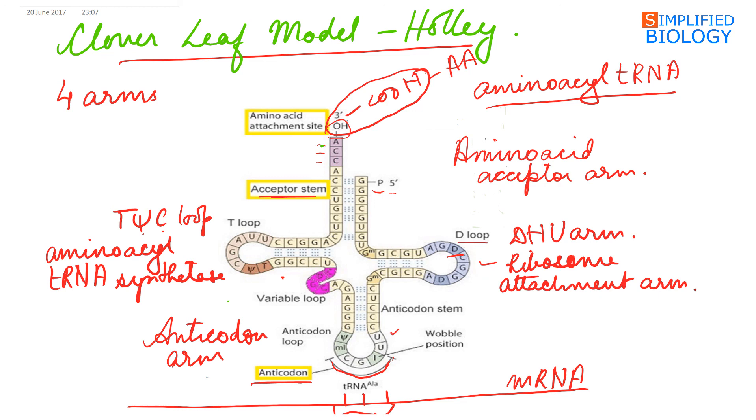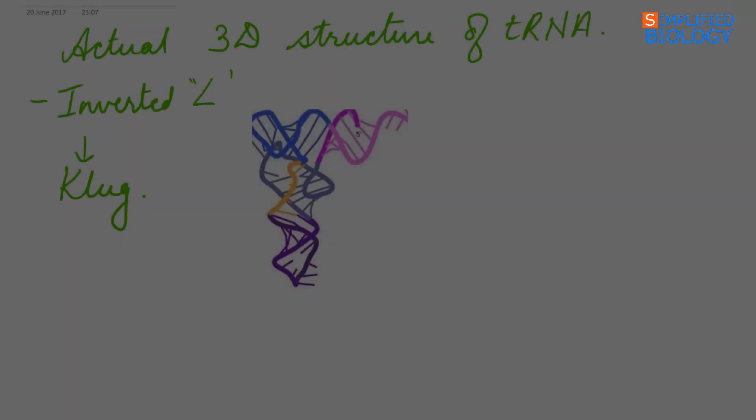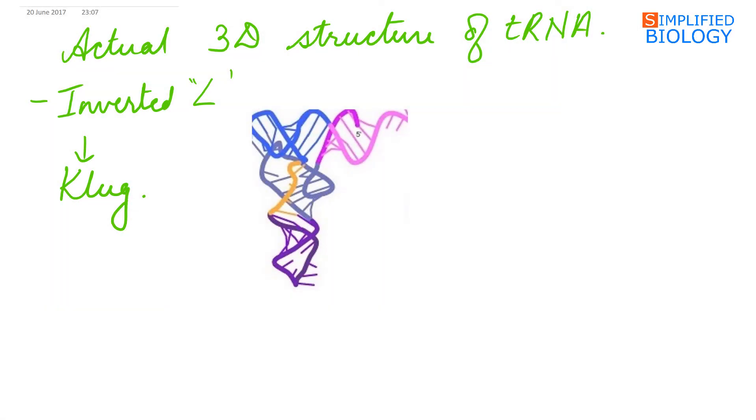A fifth variable arm may be present. The actual three-dimensional structure of tRNA is an inverted L given by Klug.